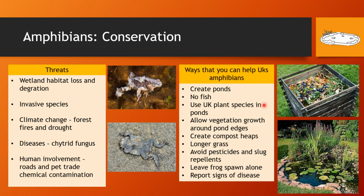Ways that you can help the UK's amphibians are very similar to how you can help reptiles. The main way is to create garden ponds. These ponds need to be fairly non-steep with shallow edges to allow amphibians to get in and out of the water. They provide places for amphibians to live, shelter, and lay their eggs. It's important that these ponds do not contain any fish such as koi, as fish are natural predators of amphibians and will eat frogspawn or salamander eggs. Use UK native plant species and allow vegetation to grow around the edges for cover from predators.